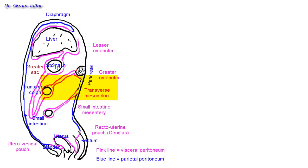The peritoneum is reflected backwards as the transverse mesocolon until it reaches the pancreas, which is a retroperitoneal structure. At that point it becomes parietal peritoneum — I'll change the color to blue — returning back to the same point. This creates a sac called the lesser sac or omental bursa, located behind the stomach.